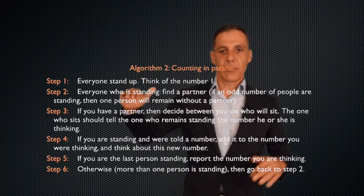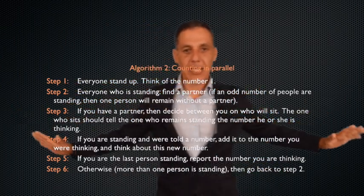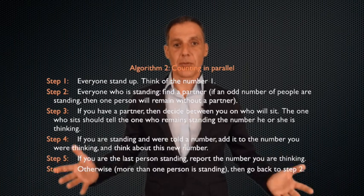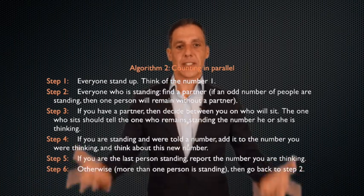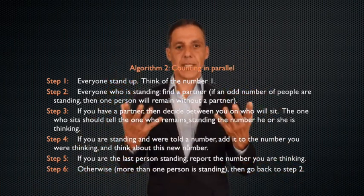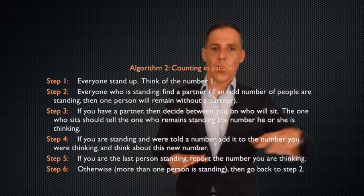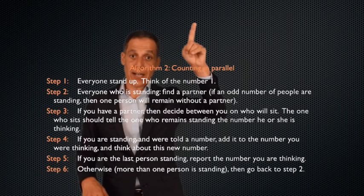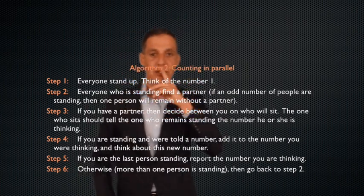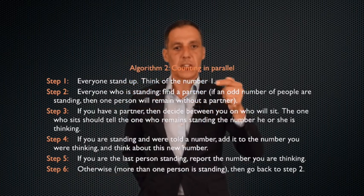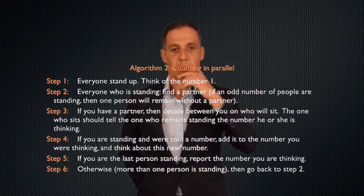So let's just start going through the steps. Step one. Imagine I have a class with 100 students. And I ask everybody to stand up. Everybody stand up, please, and think of the number one. So everybody has a single number in their head, one. And that is their count. They're counting themselves. Step one. Precise, simple, unambiguous, no problem.